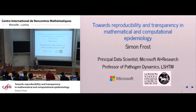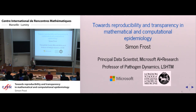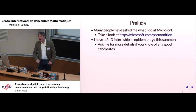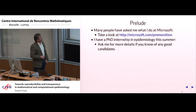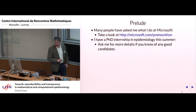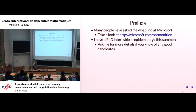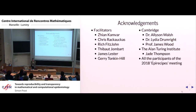Welcome everyone. As Frank mentioned, I'm a principal data scientist, which means I take numbers together and add them, but I sometimes multiply them together. I'm also a professor at London School. For those of you interested in what I really do, there's a URL you can click on. I also have a PhD internship in epidemiology this summer. This work was predominantly done when I was a fellow at the Alan Turing Institute, which is the UK's national institute on data science and AI.